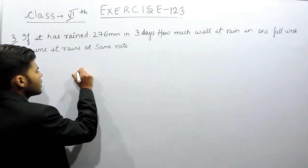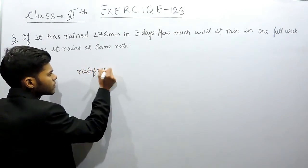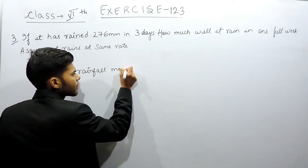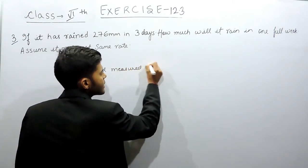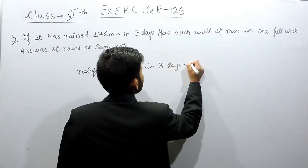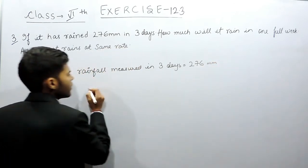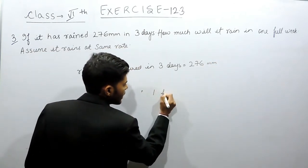So what we are given that rainfall measured in 3 days equals to 276 mm. So we have to find rainfall measured in 1 day.